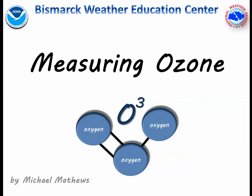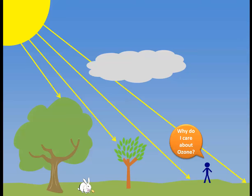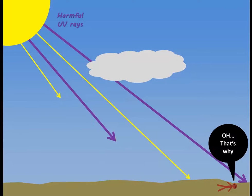Well, as you may know, the sun emits radiation at many different wavelengths. Some of those wavelengths are harmful UV rays. If these UV rays made it down to the surface, life as we know it would not exist.